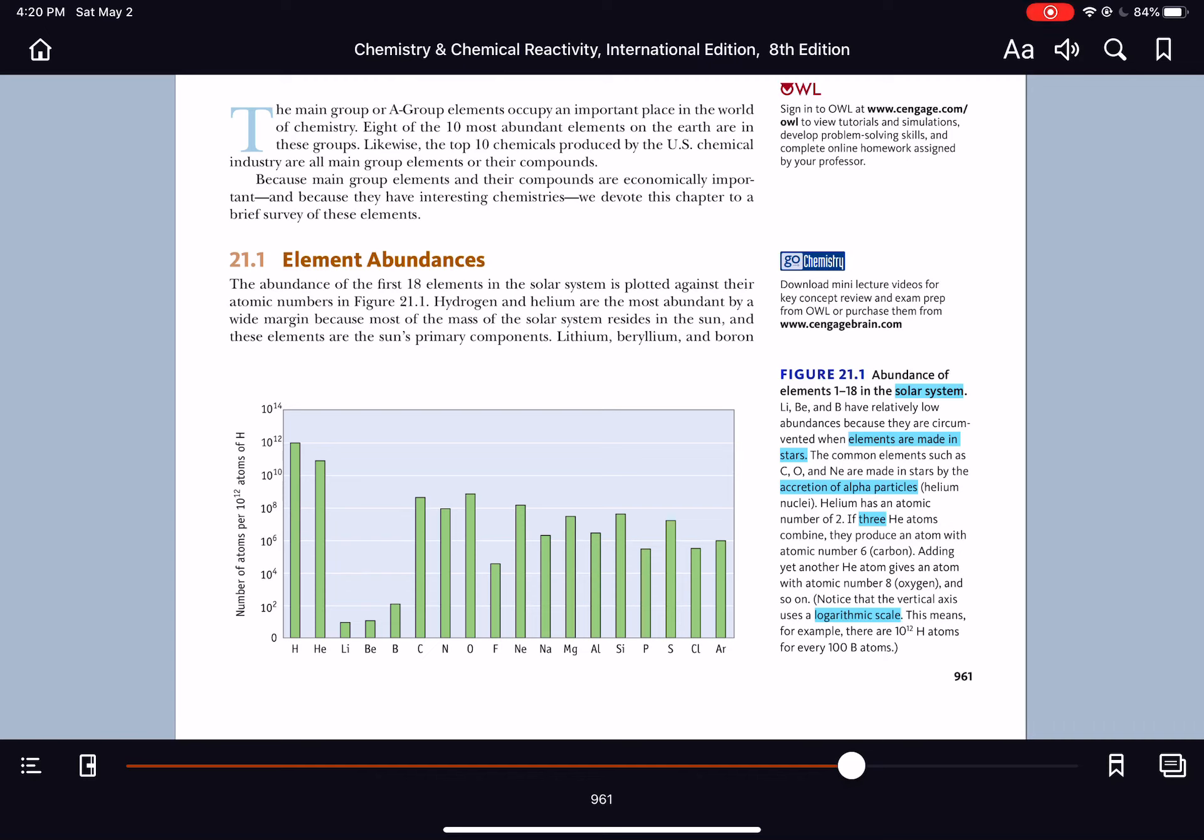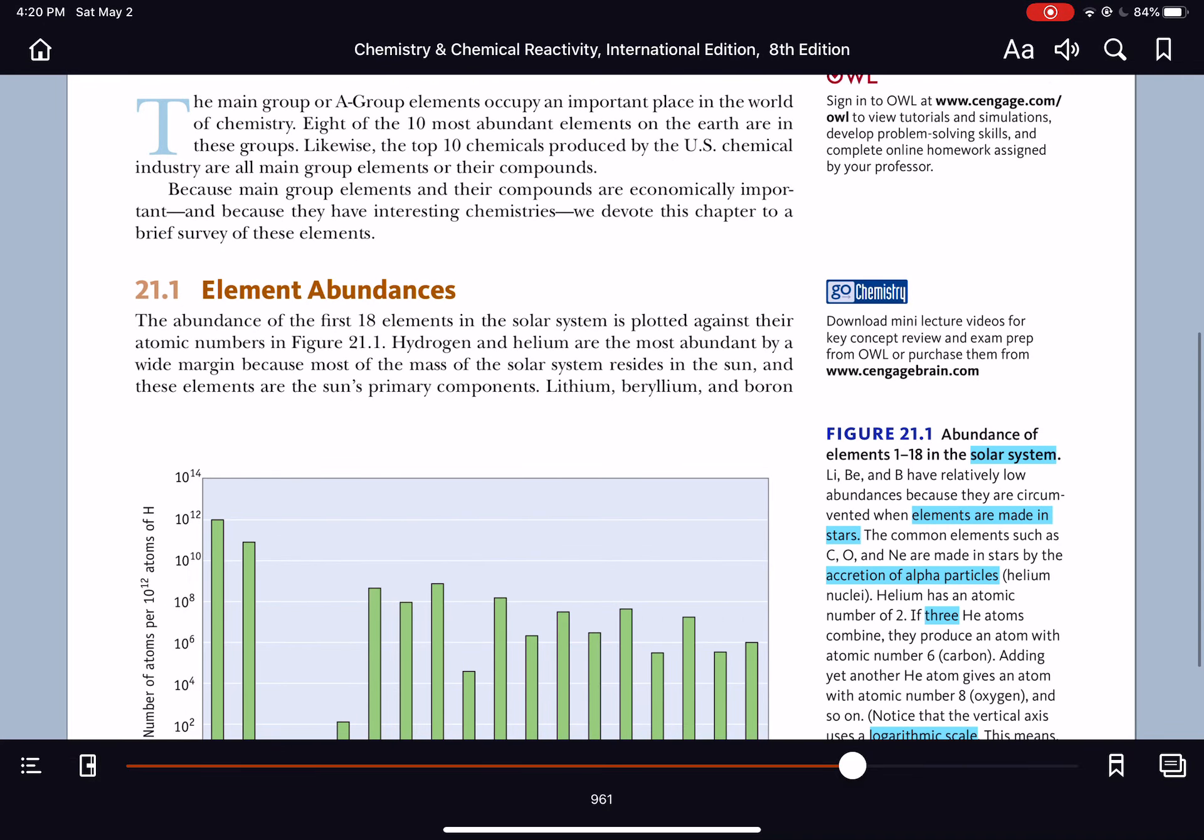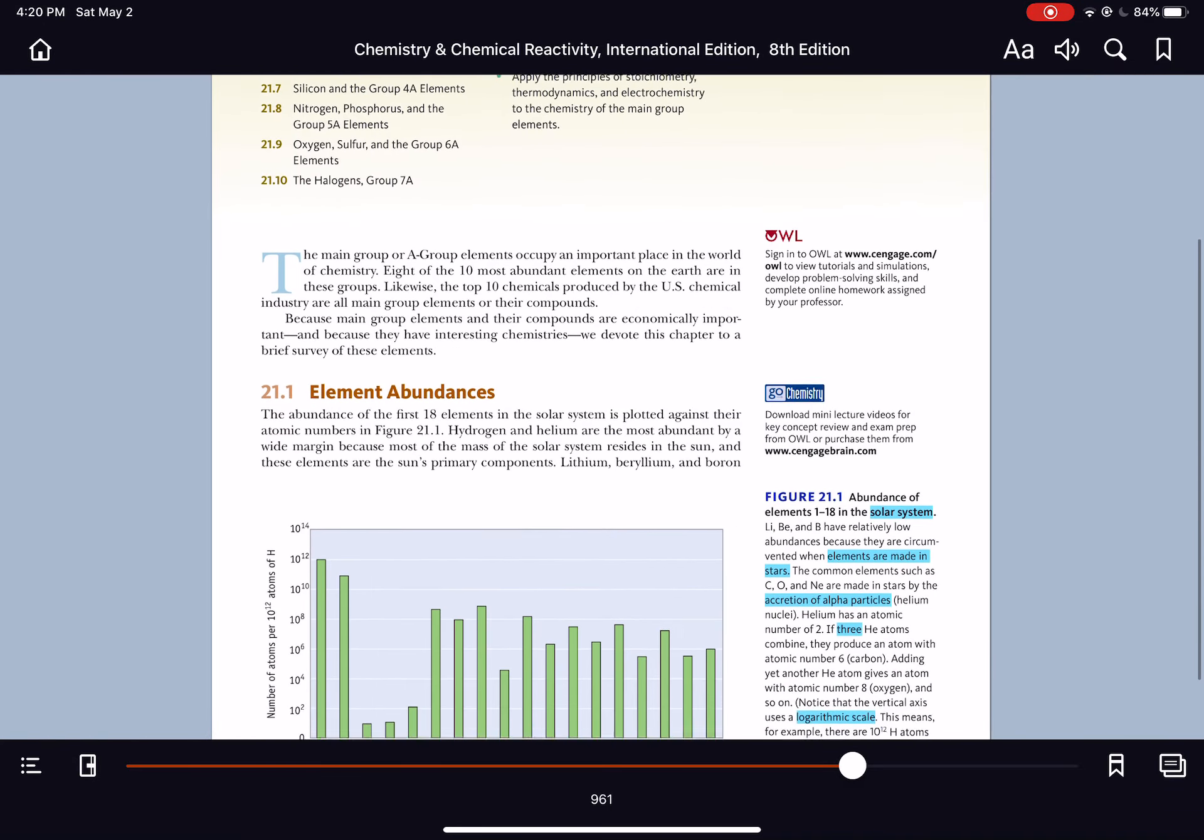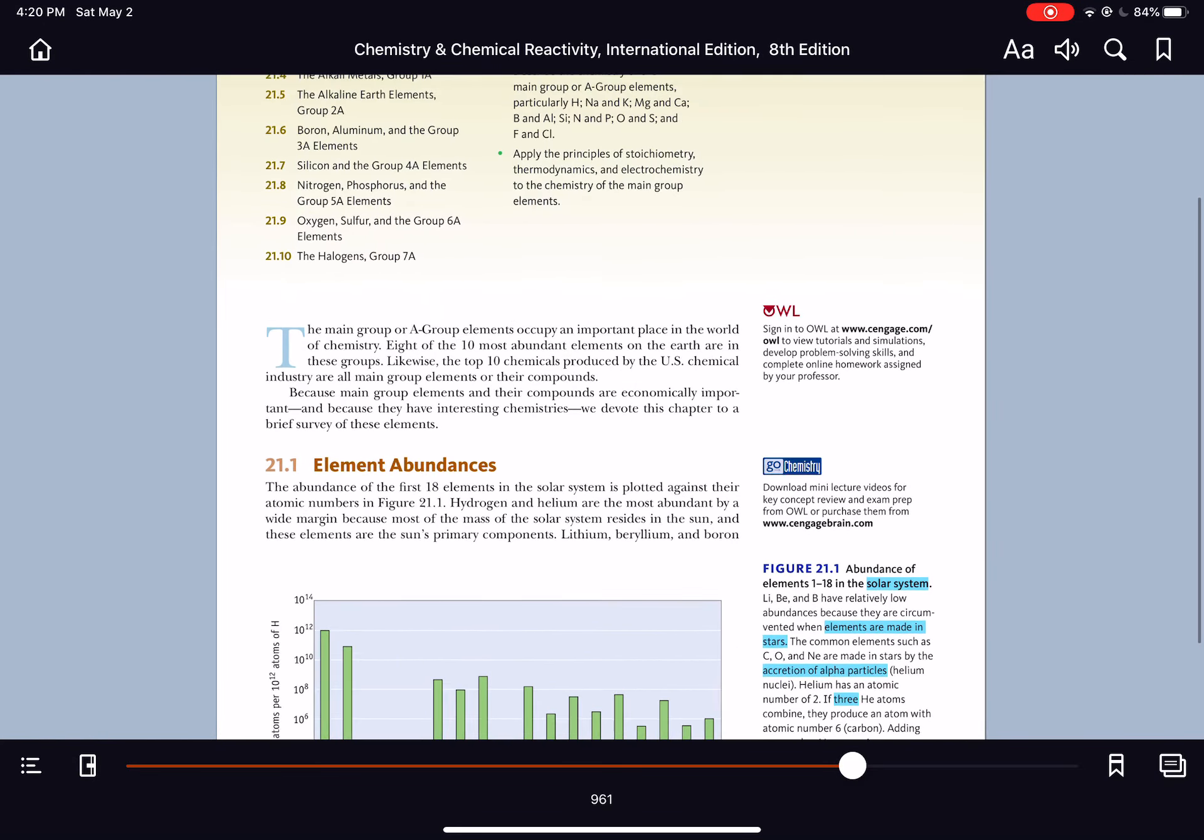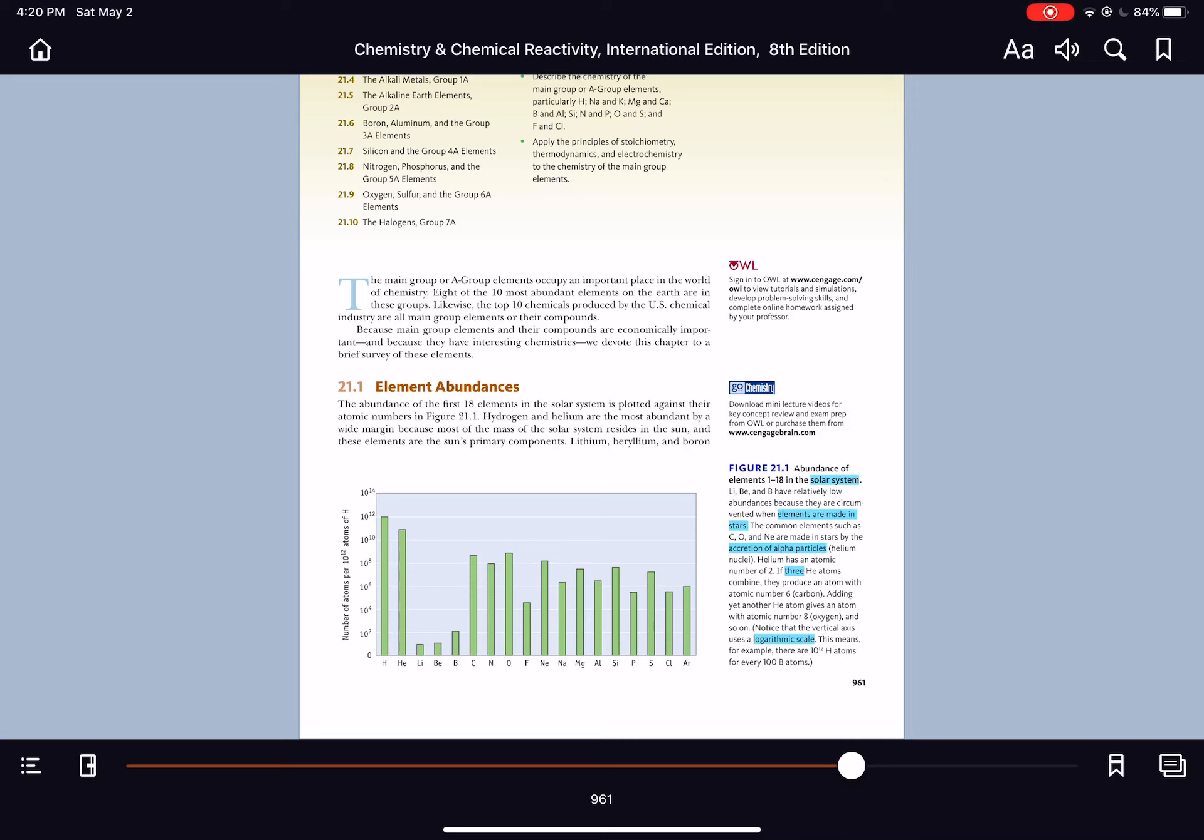But when we look at the solar system, like on this page, please notice that the y-axis is a logarithmic scale. Now, each unit is actually a factor of 100.